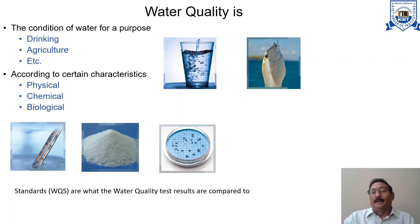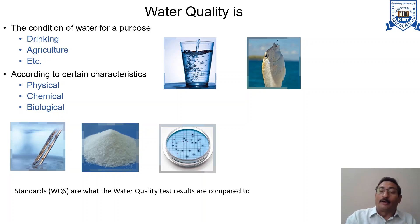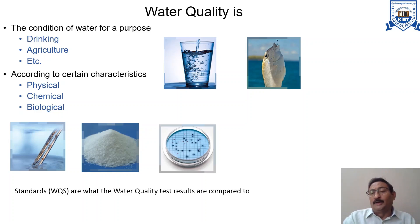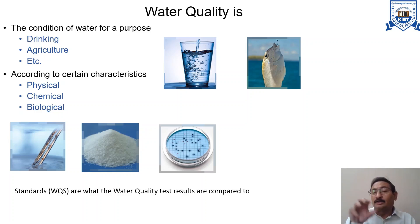Water quality refers to the condition of water determined for some specific or intended use — whether for domestic use, agricultural use, commercial use, or firefighting use. For every intended purpose, the quality characteristic of water is different.